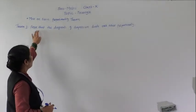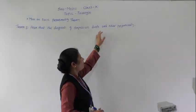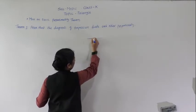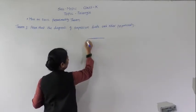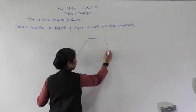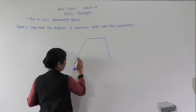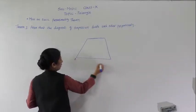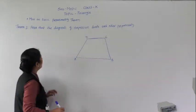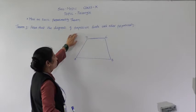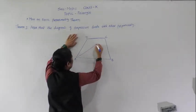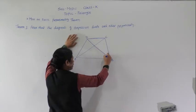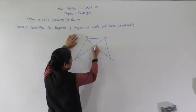Now we will see the next theorem: prove that the diagonals of a trapezium divide each other proportionally. First we draw trapezium ABCD. The diagonals of the trapezium are AC and BD, which intersect each other at point E.